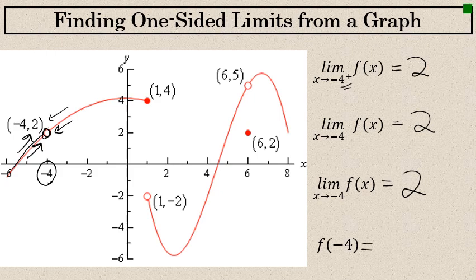However, the actual value of f of negative 4 is undefined. If you look above and below x equals negative 4, there's not a filled-in dot anywhere on this graph, so the graph is not defined when x equals negative 4.